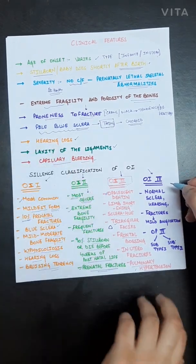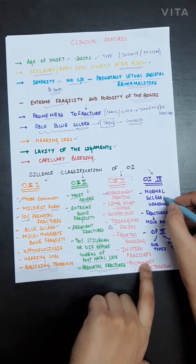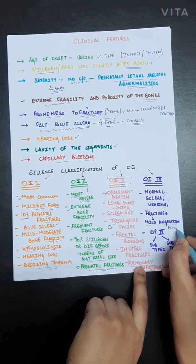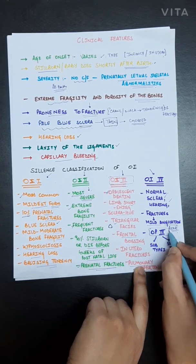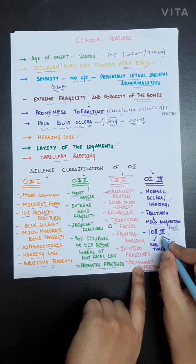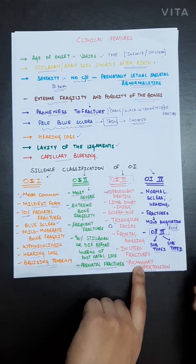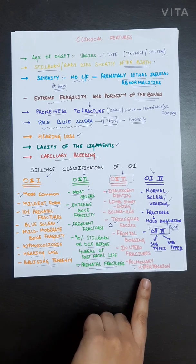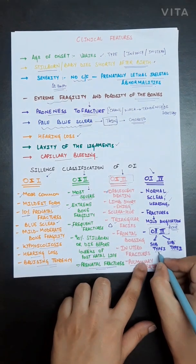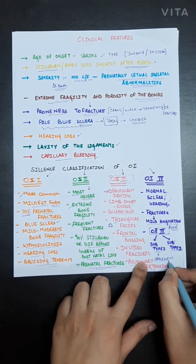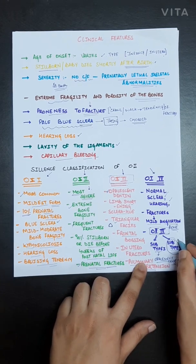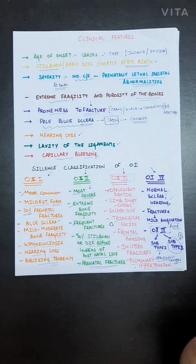In type 4, the sclera and hearing are normal, but mild fractures and mild angulation of bone are seen. Type 4 is further divided into two subtypes depending on the presence or absence of opalescent dentine: subtype 1 is associated with opalescent dentine, while subtype 2 is not.